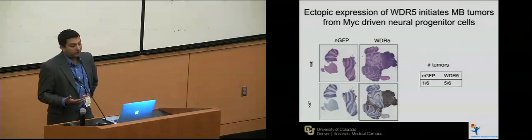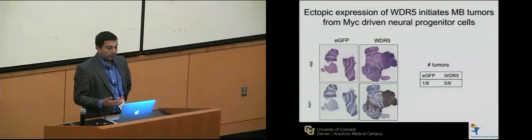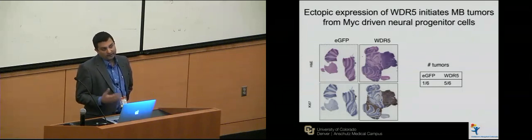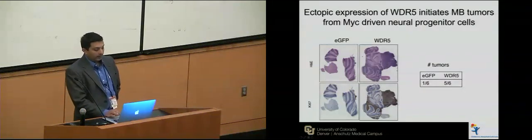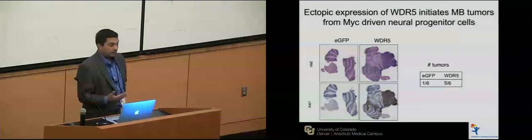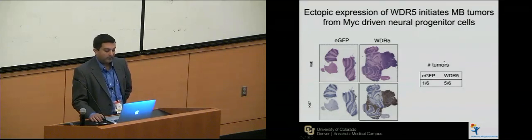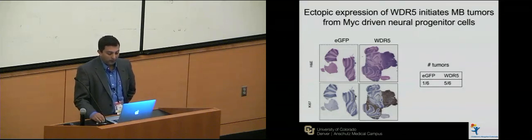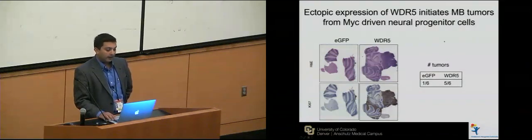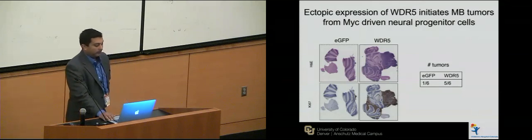Interestingly, WDR5 can actually initiate tumors in our MYC-driven neuroprogenitor cells. If we put GFP into MYC-driven neural stem cells and implant them in mice, they don't form tumors — just a normal cerebellum. But if we put in WDR5, we actually form tumors in animals, showing WDR5 is sufficient to initiate medulloblastoma tumorigenesis in combination with MYC. One out of six GFP animals formed a tumor, but five out of six WDR5 animals did, suggesting WDR5 allows MYC to transform these cells into tumors.